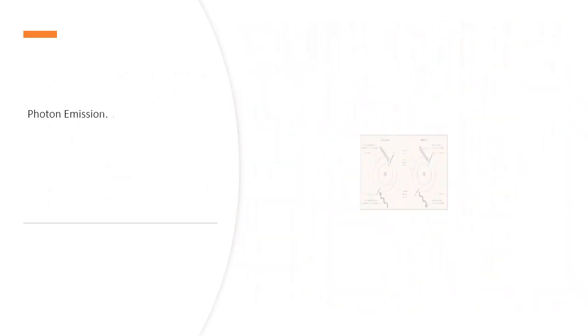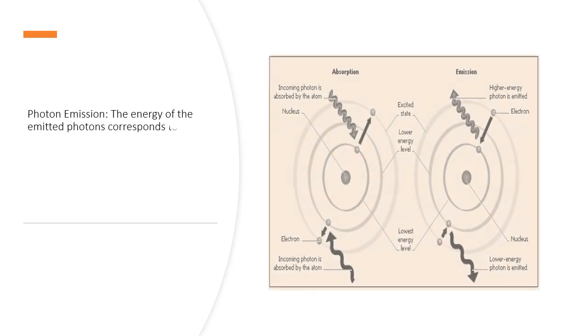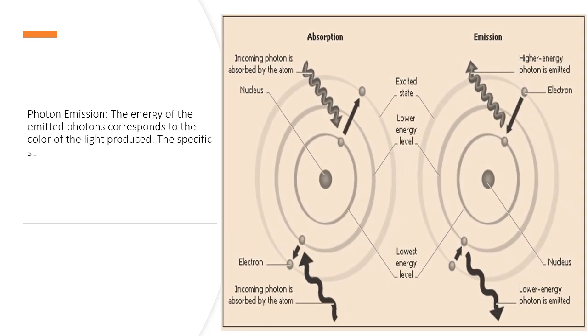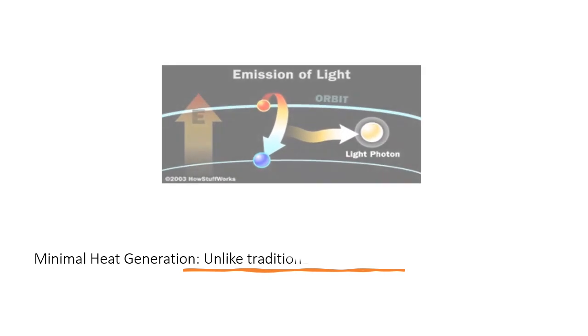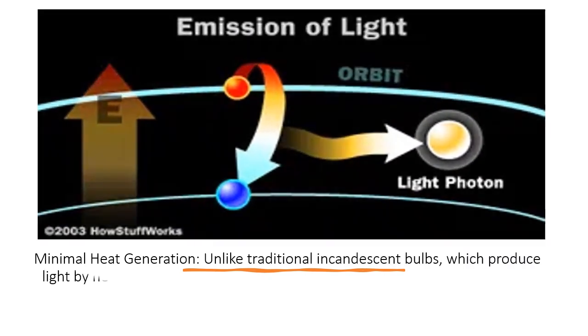Photon emission: The energy of the emitted photons corresponds to the color of the light produced. The specific semiconductor materials used in the LED determine the color of the light. For example, different combinations of materials can produce red, green, blue, or other colors of light.